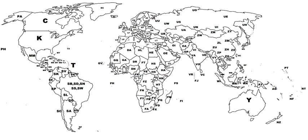Unlike the IATA codes, the ICAO codes generally have a regional structure and are comprehensive. In general, the first letter is allocated by continent and represents a country or group of countries within that continent. The second letter generally represents a country within that region, and the remaining two are used to identify each airport. The exception to this rule is larger countries that have single-letter country codes, where the remaining three letters identify the airport. In either case, and unlike IATA codes, ICAO codes generally provide geographical context.